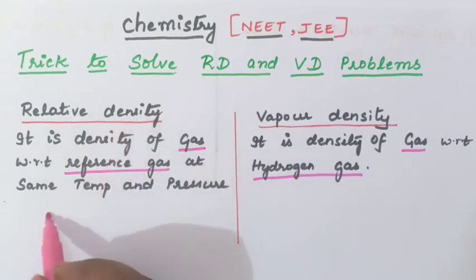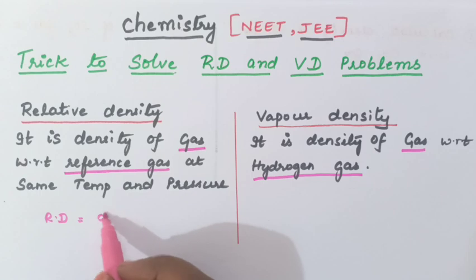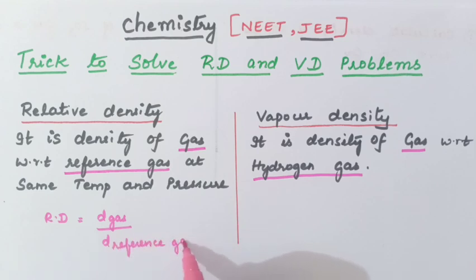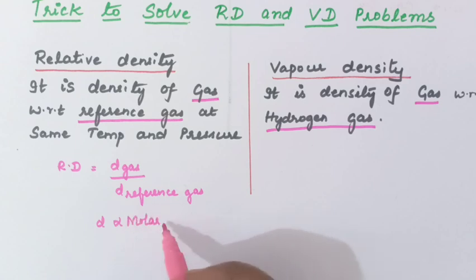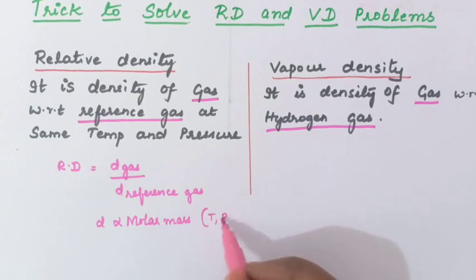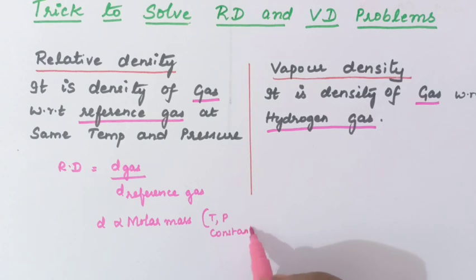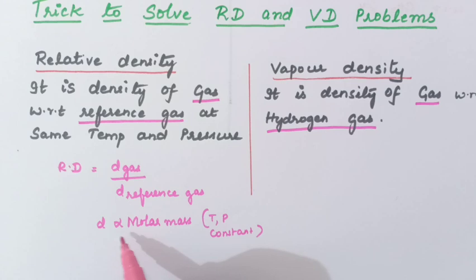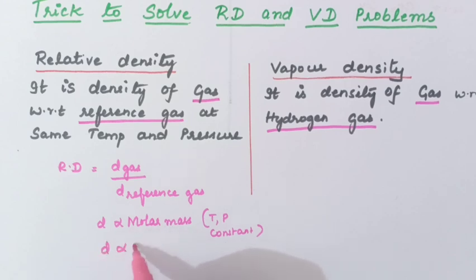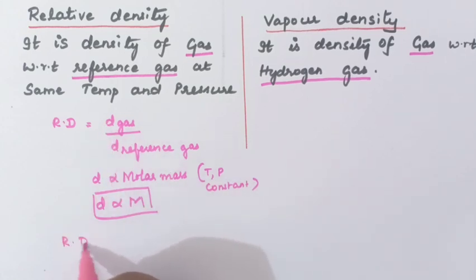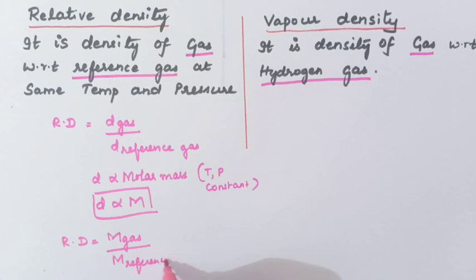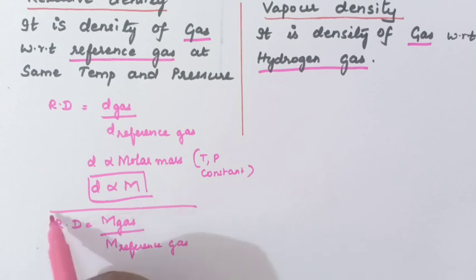So relative density RD is equal to density of gas divided by density of reference gas. Now, density is directly proportional to molar mass, provided temperature and pressure are constant. So when temperature and pressure are constant, D is directly proportional to M. So we can substitute: relative density equals molar mass of gas divided by molar mass of reference gas. This is the formula to calculate relative density.